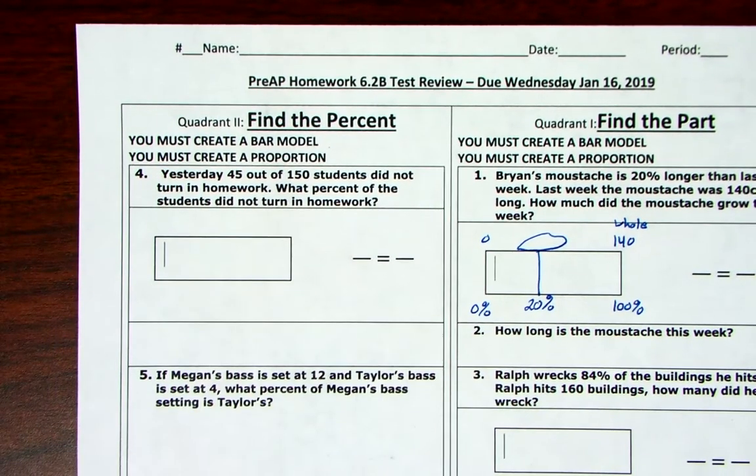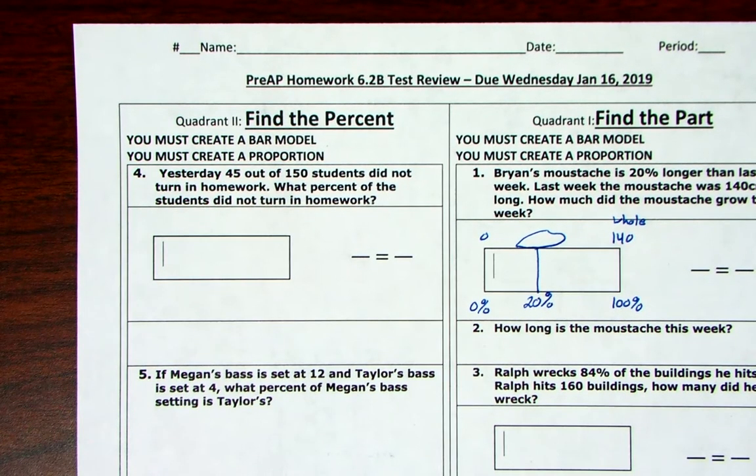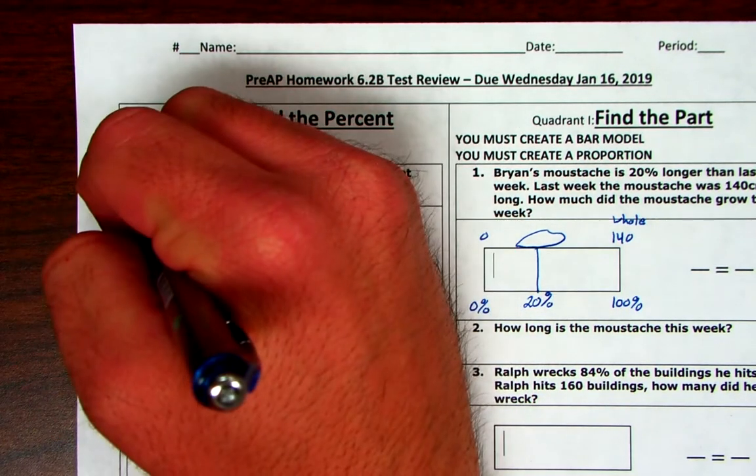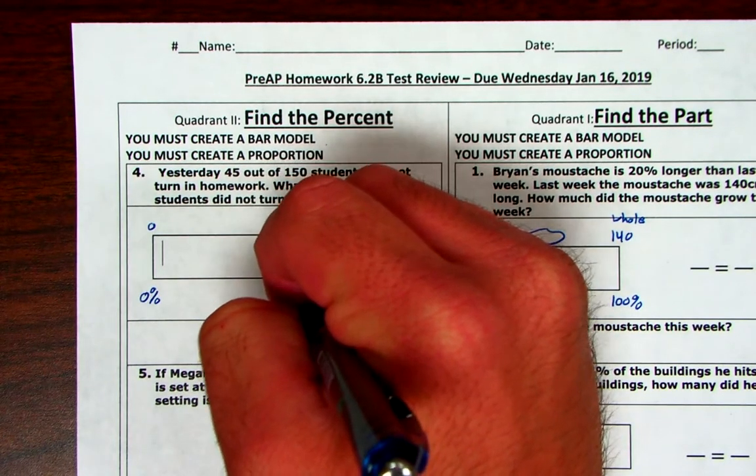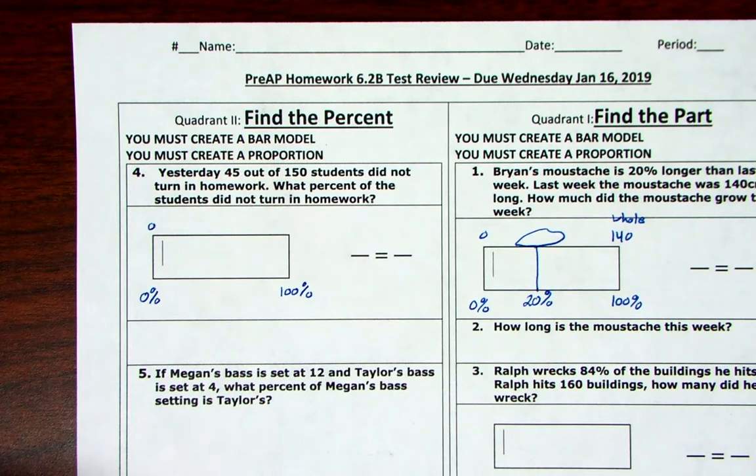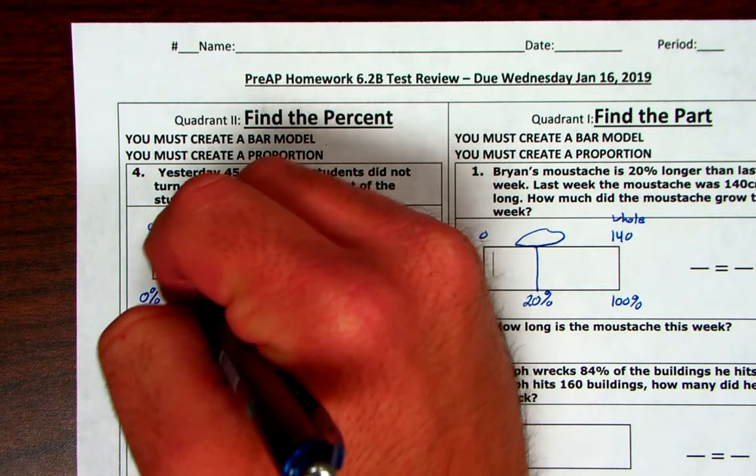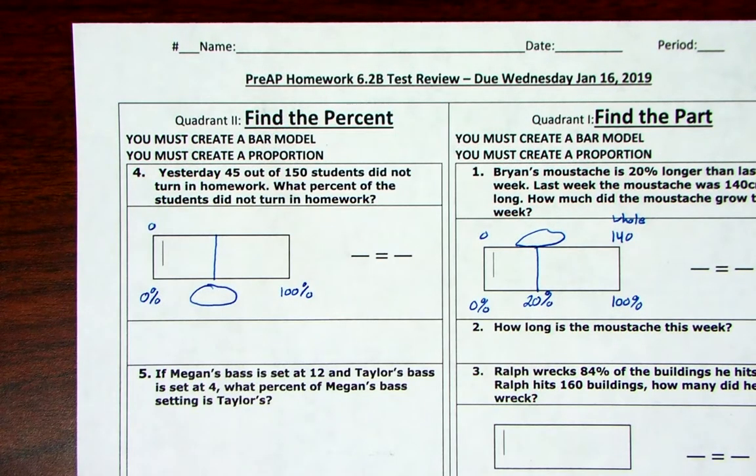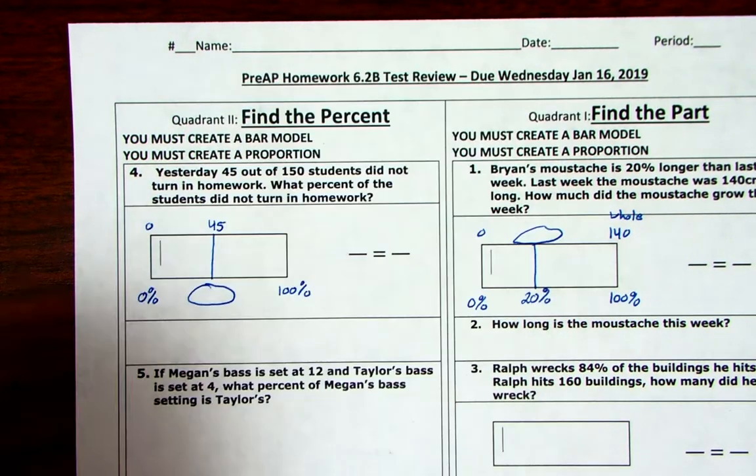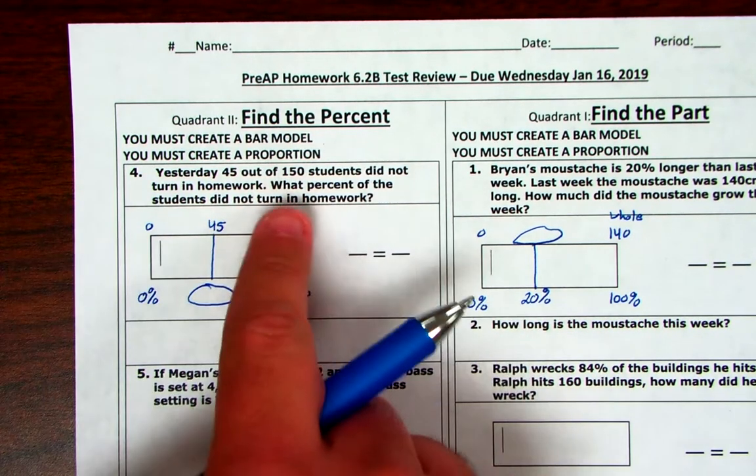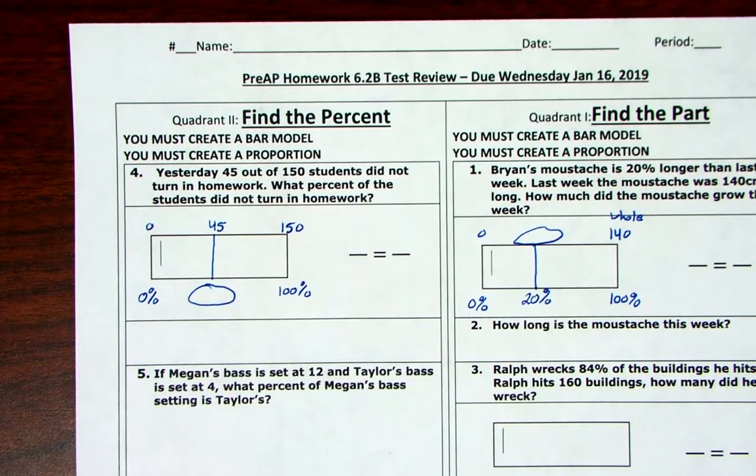Here we go. Quadrant two. Yesterday, 45 out of 150 students did not turn in their homework. What percent of the students did not turn in their homework? Well, guess what? What information does it give you? If you read the problem, does it give you a percent anywhere? No, it doesn't give you a percent anywhere. So that's what you're solving for. It gives you the part. How many students didn't turn in their homework? 45. Well, how many total students does the teacher have? The total is 150. When I set it up, you get to go solve it.